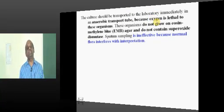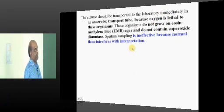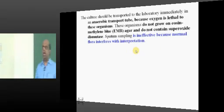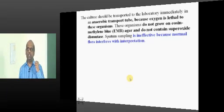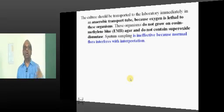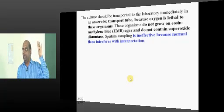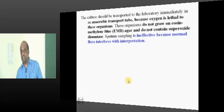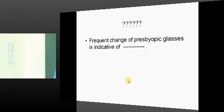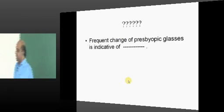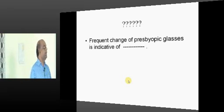Hence you need to transport it very fast. The EMB agar which we commonly use - on that these anaerobic organisms don't grow and they are very sensitive to oxygen. They will die because oxygen leads to superoxide radicals. Other organisms have the superoxide dismutase, but obligatory anaerobic organisms don't possess the superoxide dismutase.